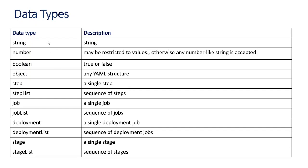These are the list of data types allowed in a pipeline. For now, I will go through a few basics to make you understand how we can use parameters in Azure DevOps pipeline. Maybe in future I will make separate videos on all separate data types. Now let's see a few basic examples about how to use these parameters.